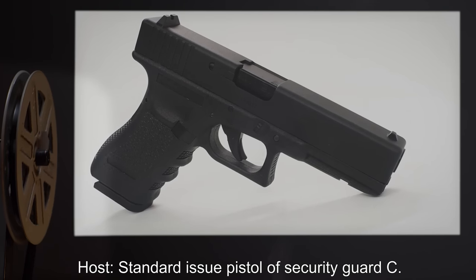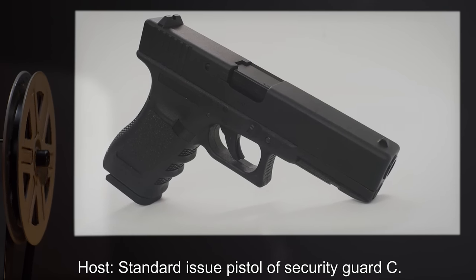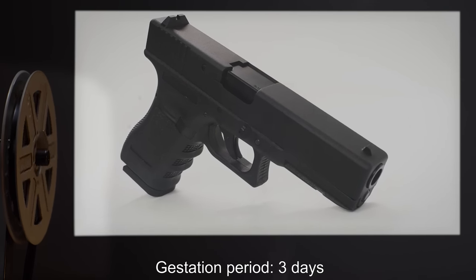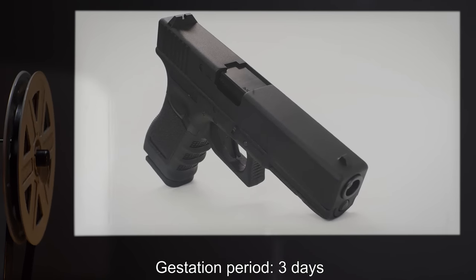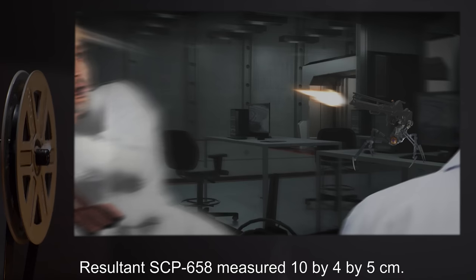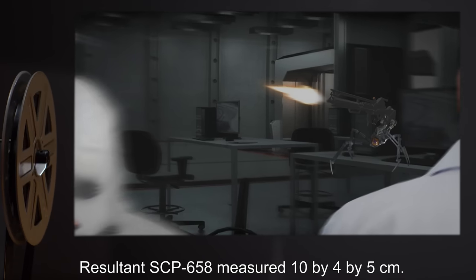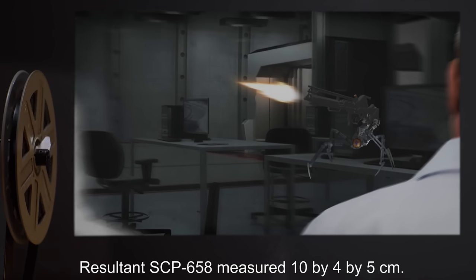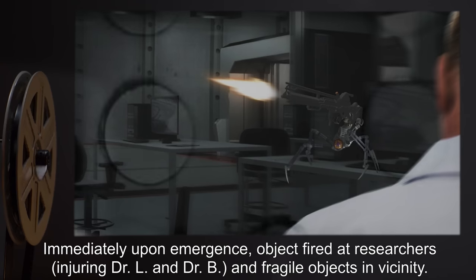Host: Standard Issue Pistol of Security Guard C. Gestation Period: 3 Days. Notes: Resultant SCP-658 measured 10 by 4 by 5 centimeters. Immediately upon emergence,